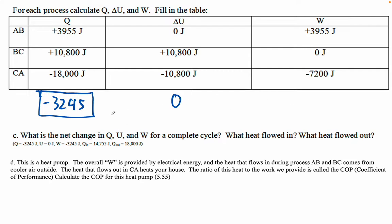And then what do you think this is going to be? This has to equal this. So I'll bet if we add these together, we'll get this. Negative 3245 joules. So now we've answered the net Q, U, and W.